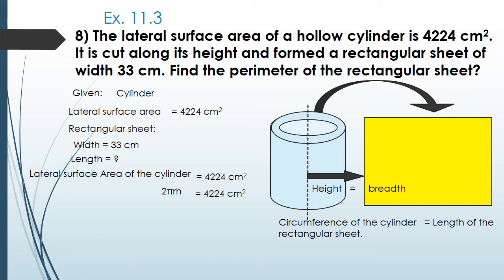Replacing 2πr with L and h with B, we get L × B = 4224. We know the breadth B = 33 centimeters, so substituting: L × 33 = 4224. Transposing 33, we get L = 4224 ÷ 33. Calculating: 33 × 128 = 4224, so the length of the rectangular sheet is 128 centimeters.